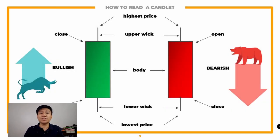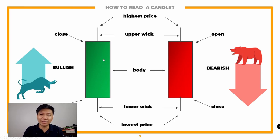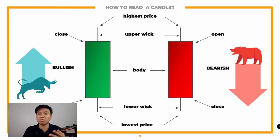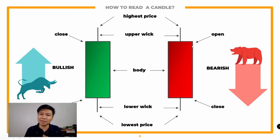So how do you read the candlestick? Let's talk first about the components ng isang candlestick. It has a body — yung colored part na yan — and it has a wick, yung mga extension ng candlestick depende sa price. There are two types: bullish at bearish. Pag sinabing bullish, pataas — that's how the bull attacks. Pag sinabing bearish, pababa — pag umatake yung bear, pababa. Hopefully that clears up kung ano yung bull and bear pag pinag-usapan o bullish or bear market.